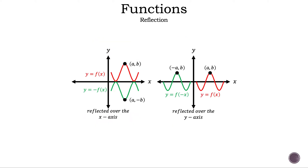One last scenario before we look at the examples is reflection — that is why I said the absolute value of our result. Dealing with negative numbers is tricky. If the negative is outside the function, the output is changed and is reflected across the x-axis, because the y value has flipped from positive to negative or vice versa. If the negative is inside the function, the input is changed and is reflected across the y-axis, because the x value has flipped from positive to negative or vice versa.